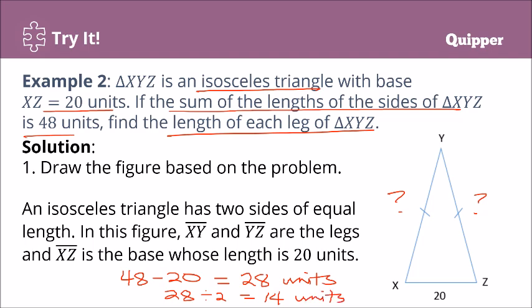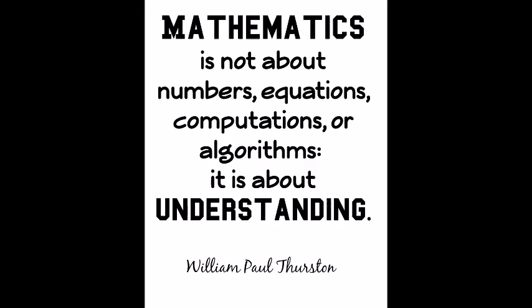Therefore, the length of each leg of triangle XYZ is equal to 14 units. Okay, thank you.